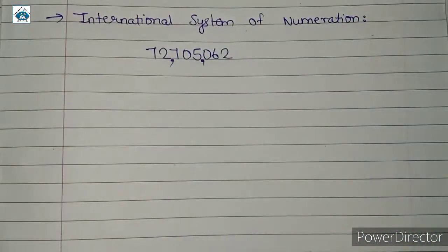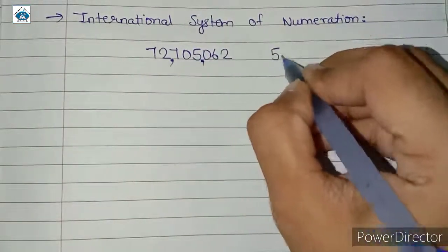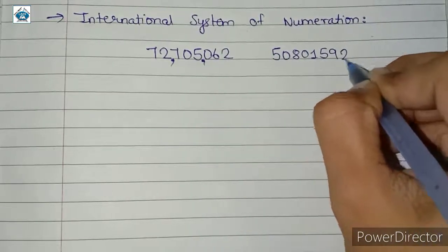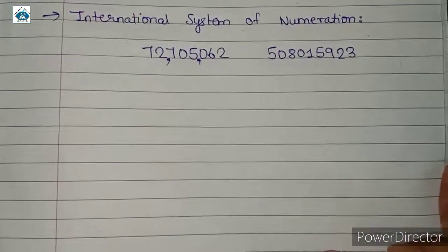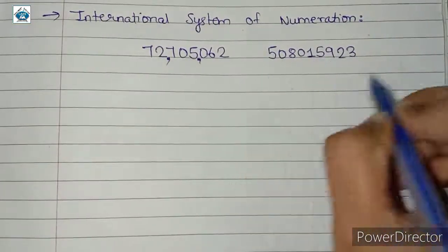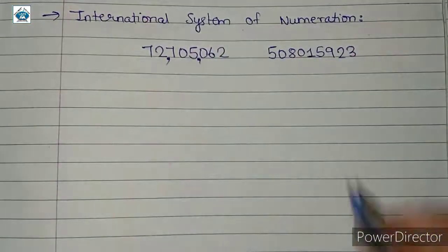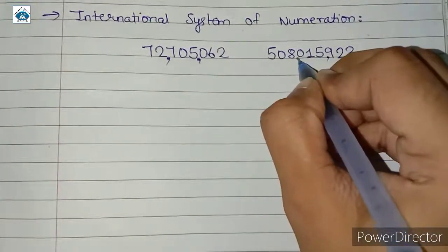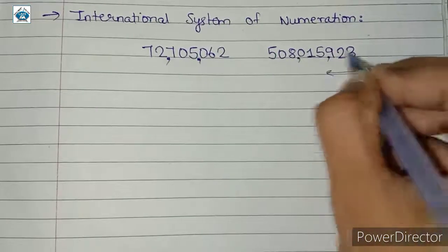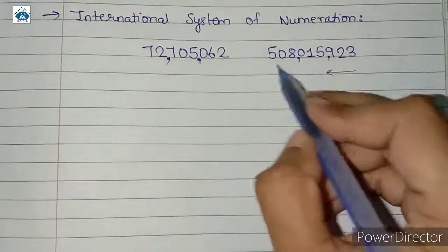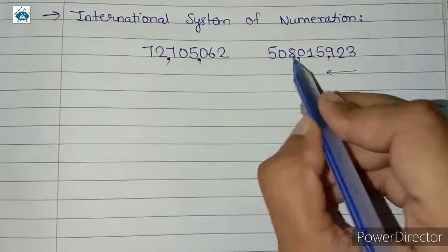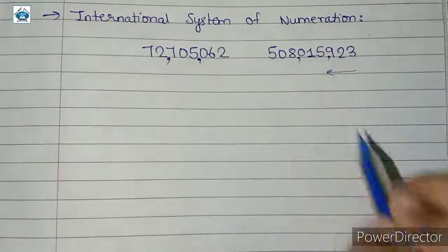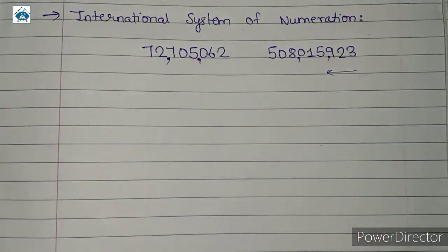If we had an even larger number, for example 508015923, and we were asked to put commas using the international system of numeration, then the first comma comes after 3 digits, the second comma also after 3 digits, and the next comma after 3 more digits. But we do not use a comma after the leading digit 5 since there are no digits to its left.